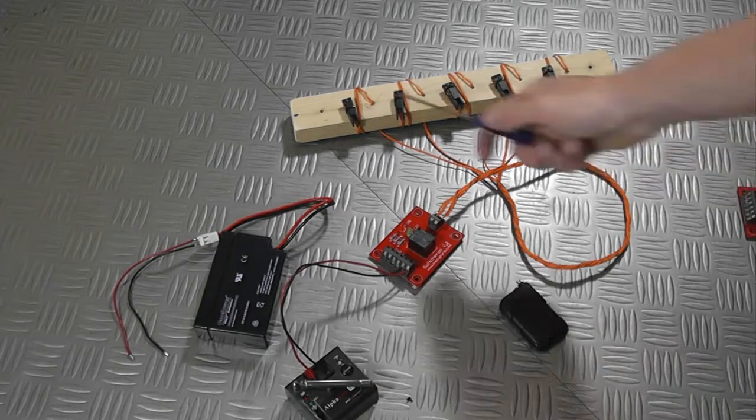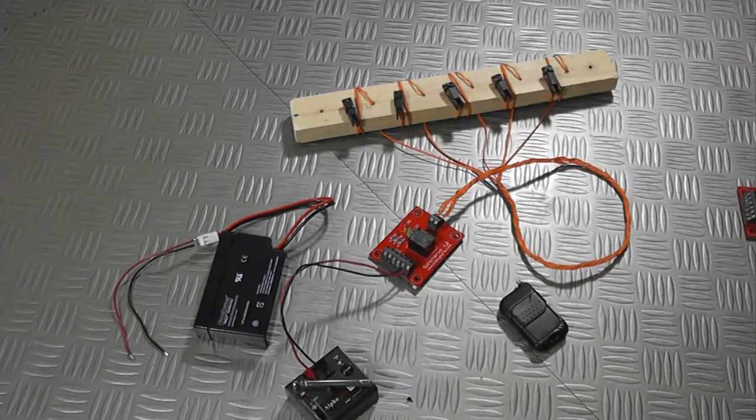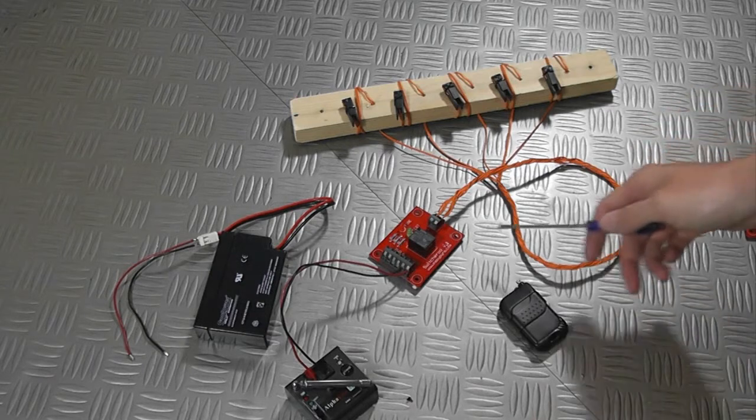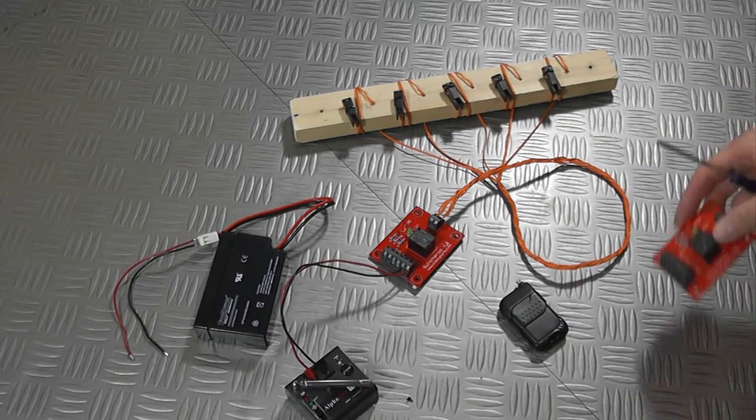So in this example here we've got one, two, three, four, five talon igniters mounted in a block of wood connected to bits of visco fuse. We've got all of those going into the output of the switcheroo relay board.